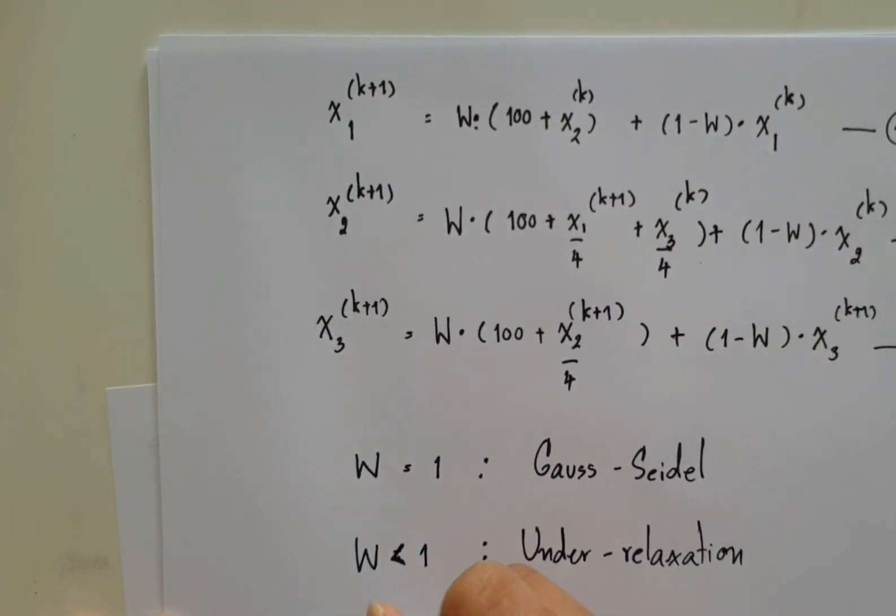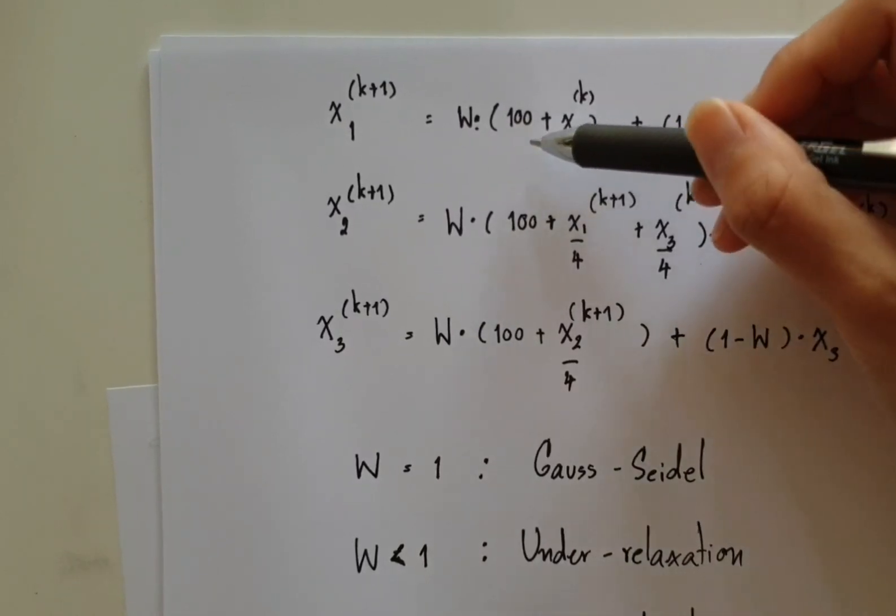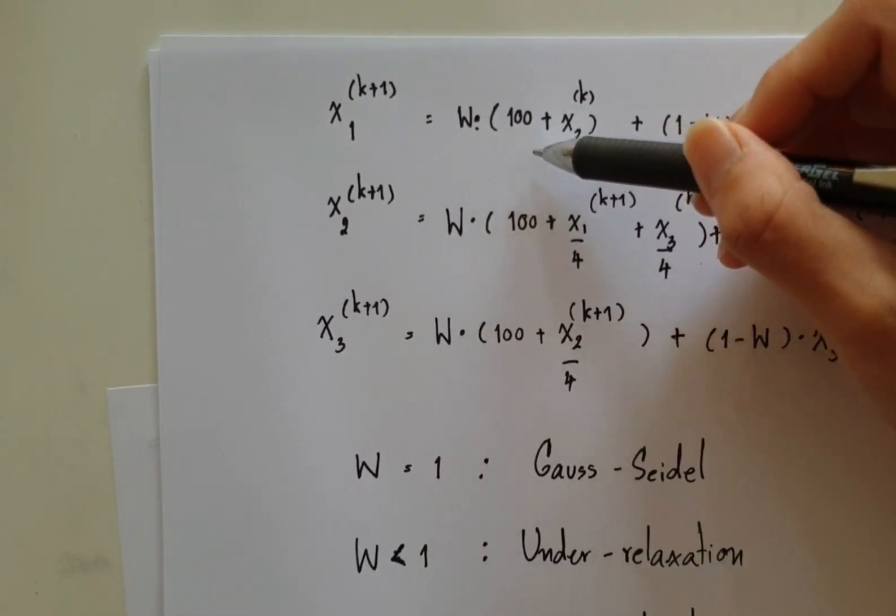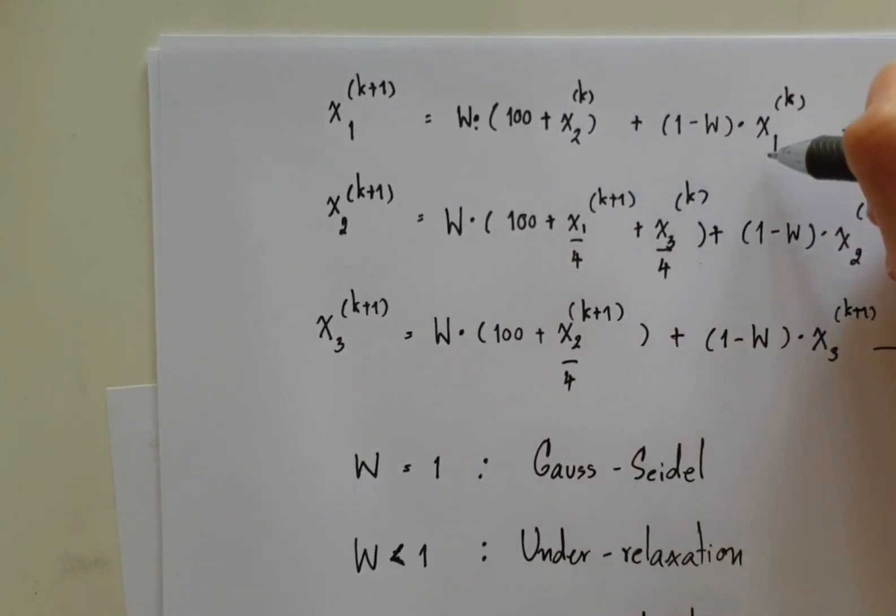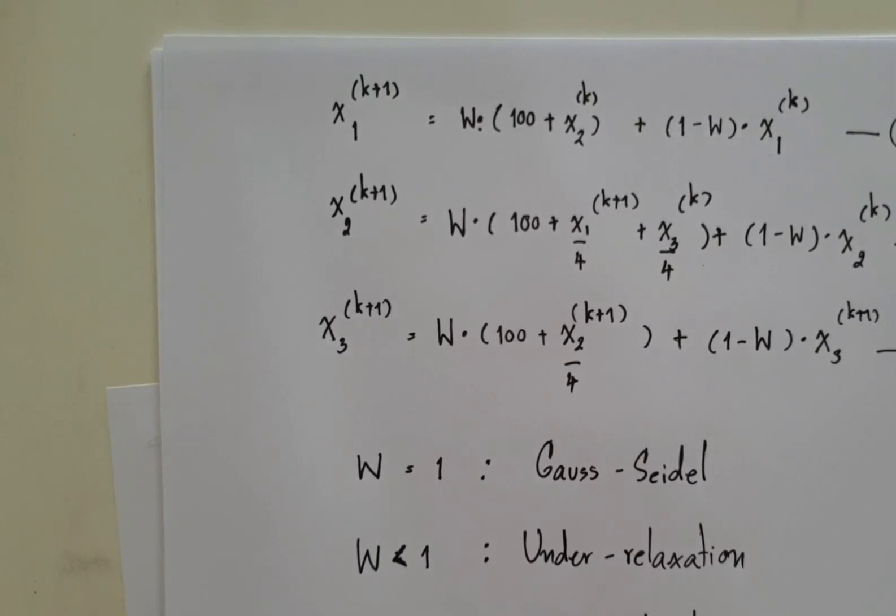While if you set W greater than 1, it would be over-relaxation. So if W is greater than 1, you try to push much more weight for the Gauss-Seidel compared to the previous iteration. The effect you will get is that it tries to accelerate the solution of the system of equations.